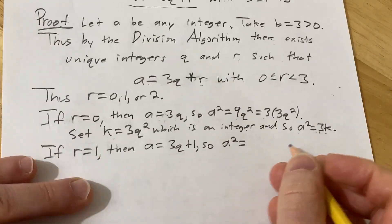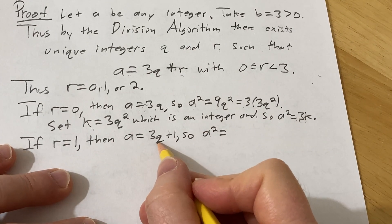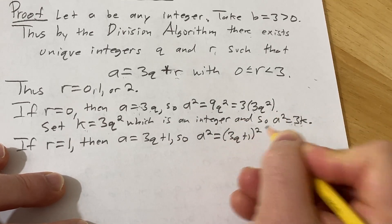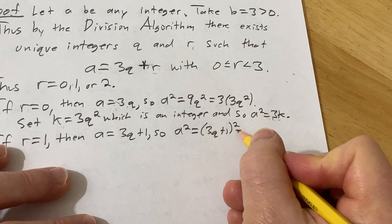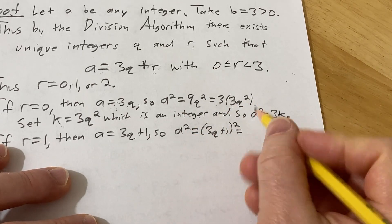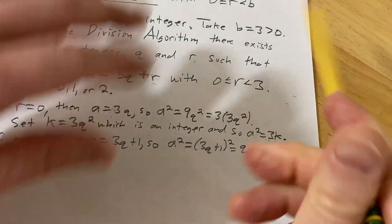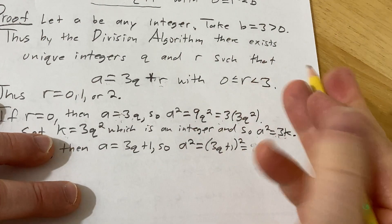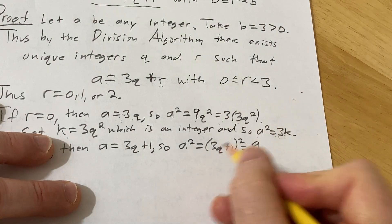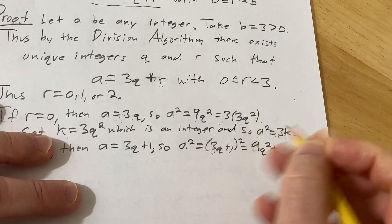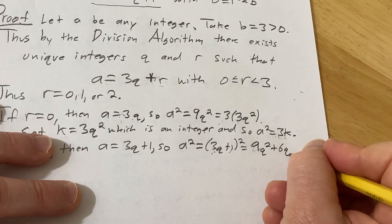So a squared is equal to 3q plus 1 squared. Square the first one, 9q squared plus multiply these and double them, so 3q times 2 is 6q, square the 1.